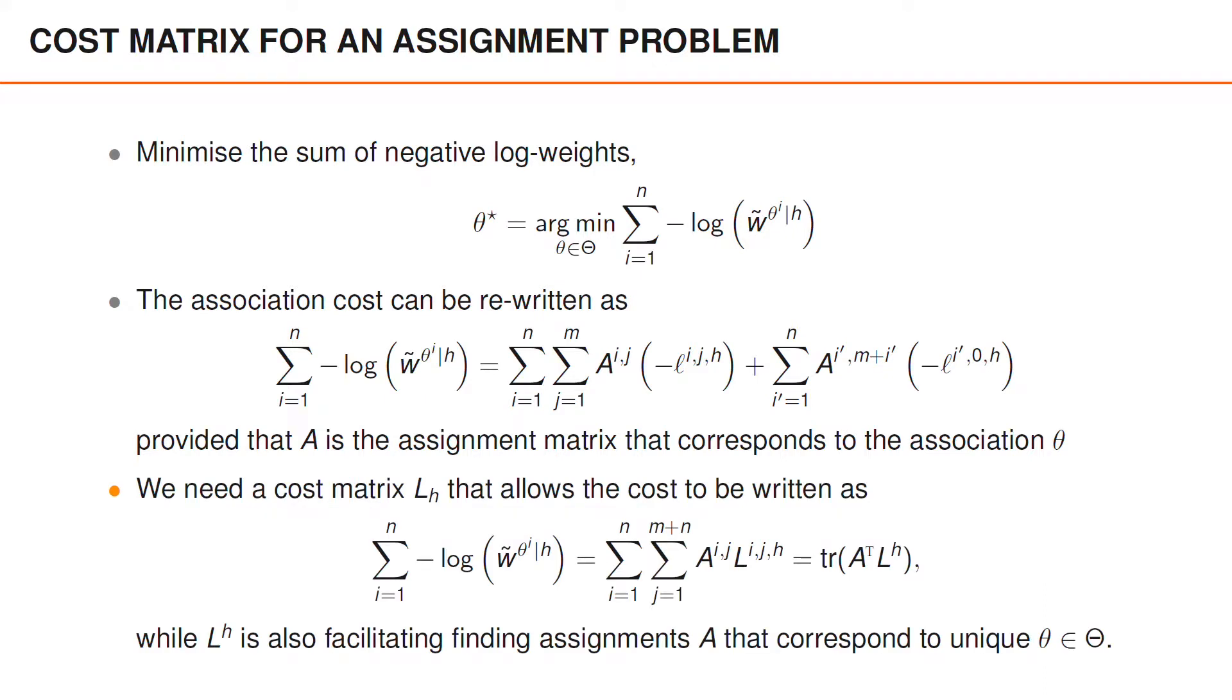What we need now is a cost matrix that allows the cost to be written as the trace of A transpose L, while also facilitating finding assignments that correspond to unique valid associations.